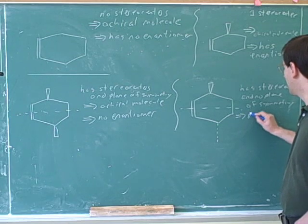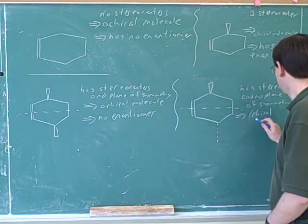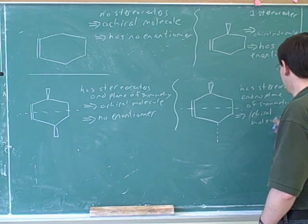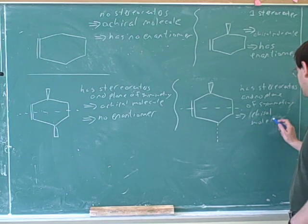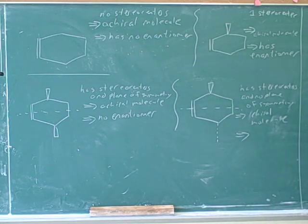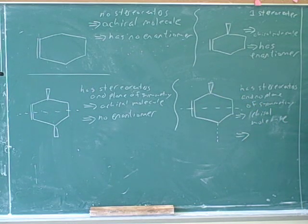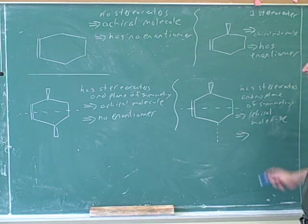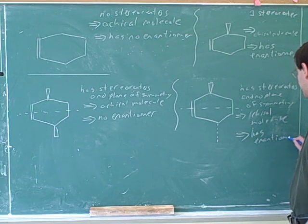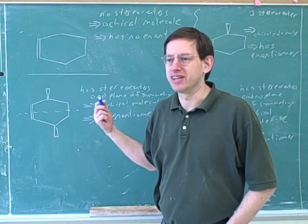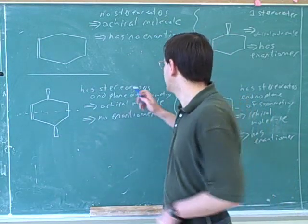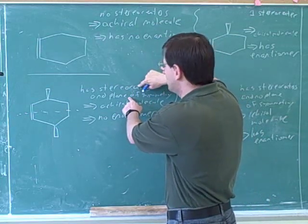So we know this is an achiral molecule. When you say that something is an achiral molecule, be careful — that tends to sound like 'a chiral.' So if we have this chiral molecule, there are stereocenters, and these stereocenters are not canceling each other out because there's no plane of symmetry. So this is indeed a chiral molecule and it does have an enantiomer. Now let's talk about the terminology: the idea of being meso. The definition of meso is exactly this — where you have both stereocenters and a plane of symmetry.